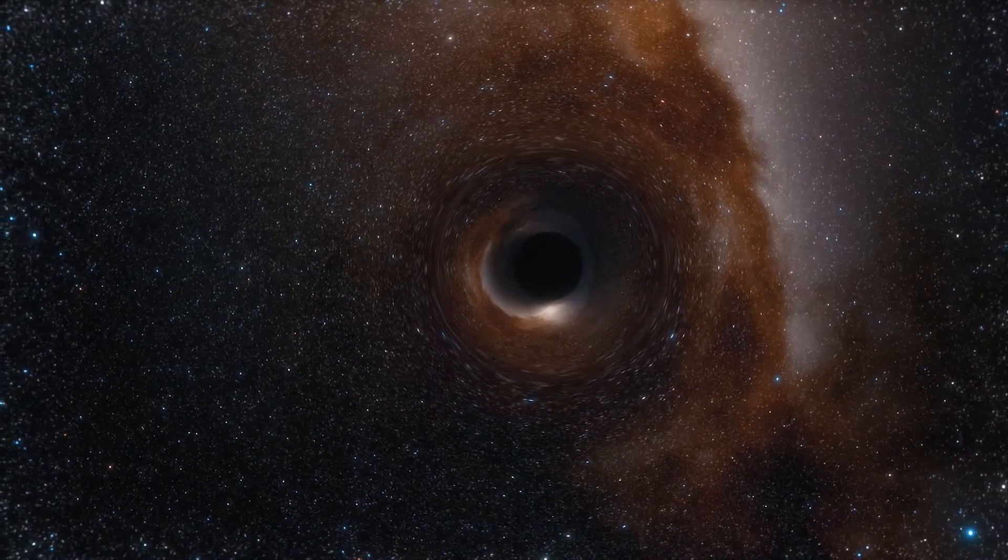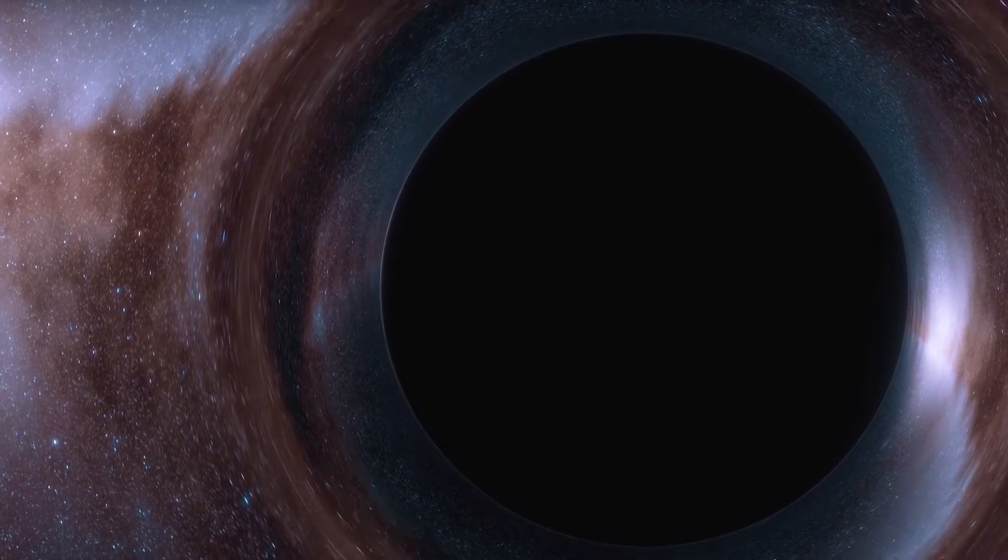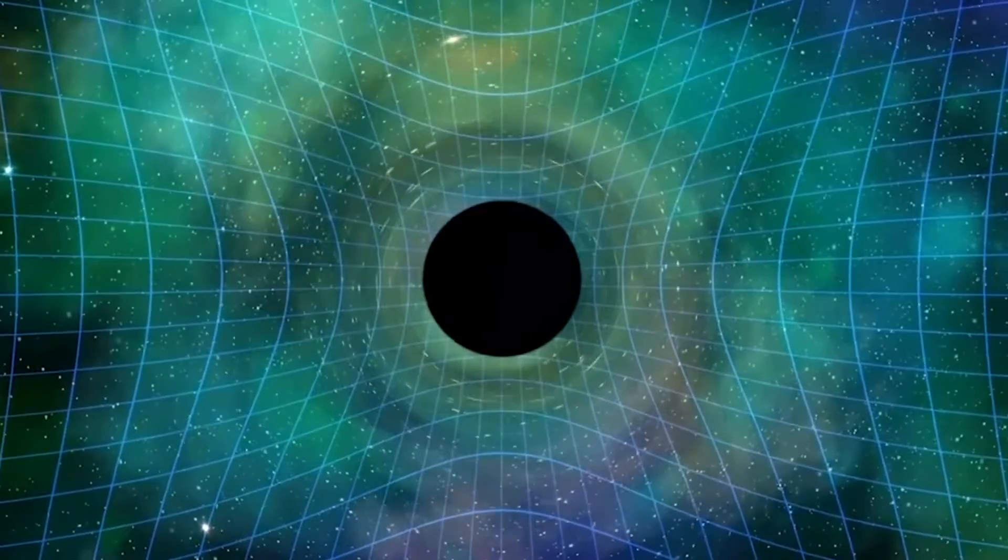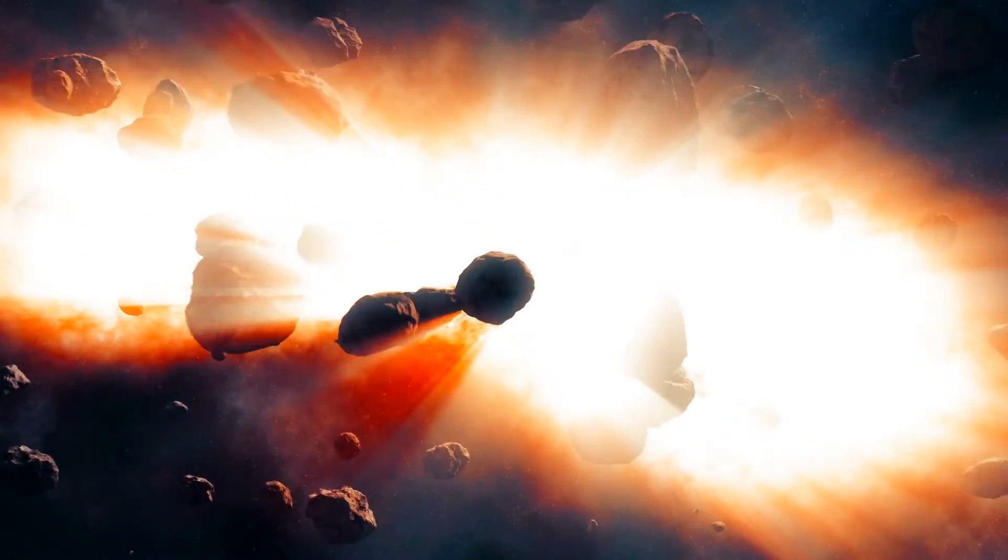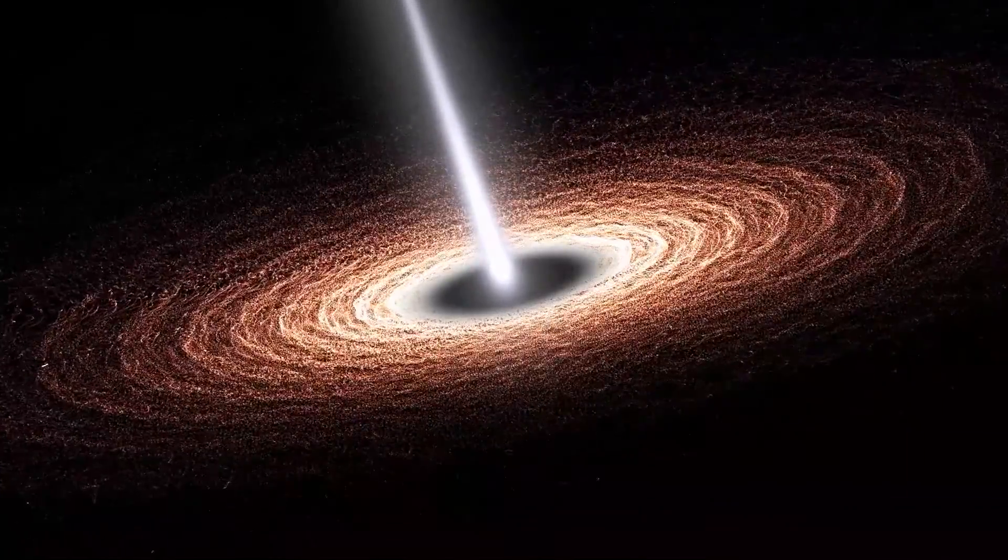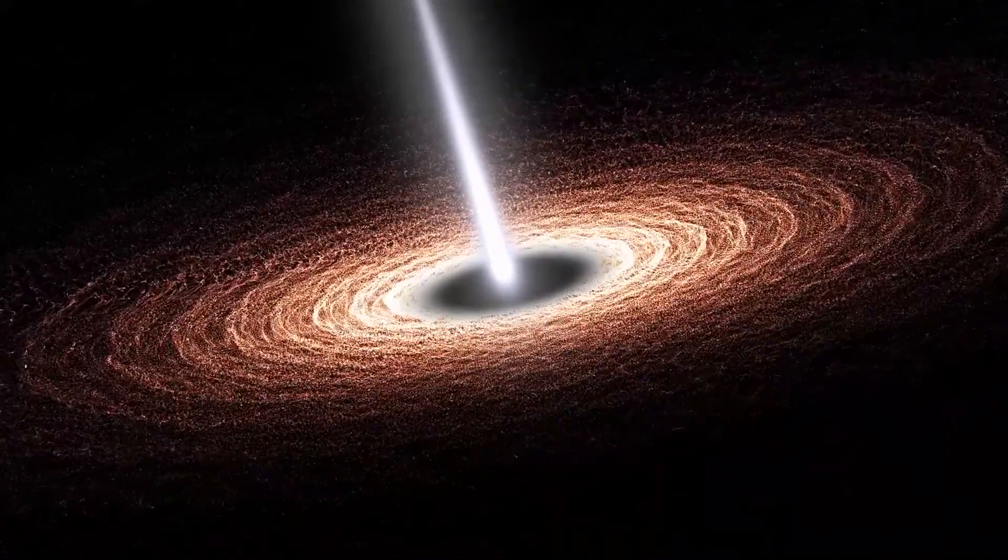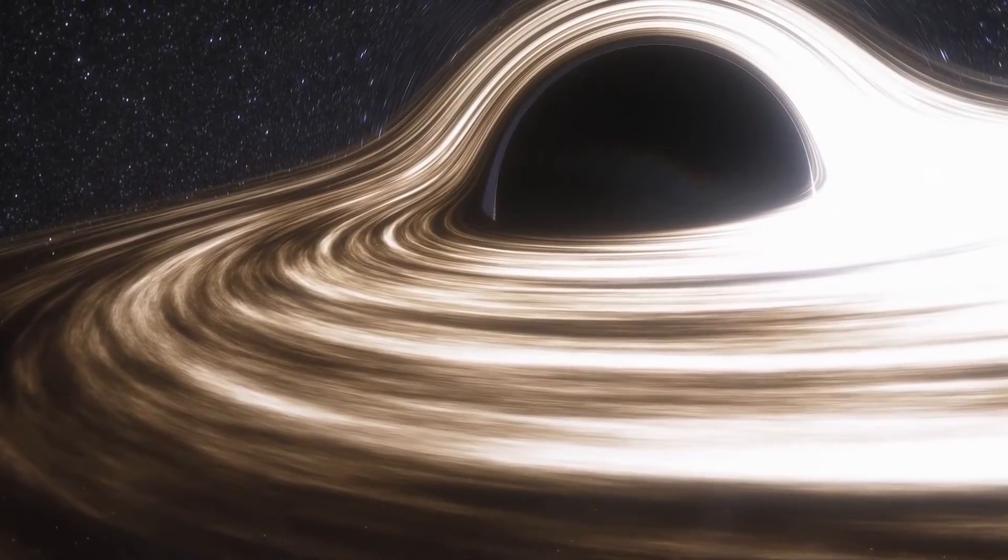Scientists once thought that black holes came in only small and large sizes, but research has revealed the possibility that mid-size or intermediate black holes could exist. Such bodies could form when stars in a cluster collide in a chain reaction. Several of these IMBHs forming in the same region could then eventually fall together in the center of a galaxy and create a supermassive black hole.